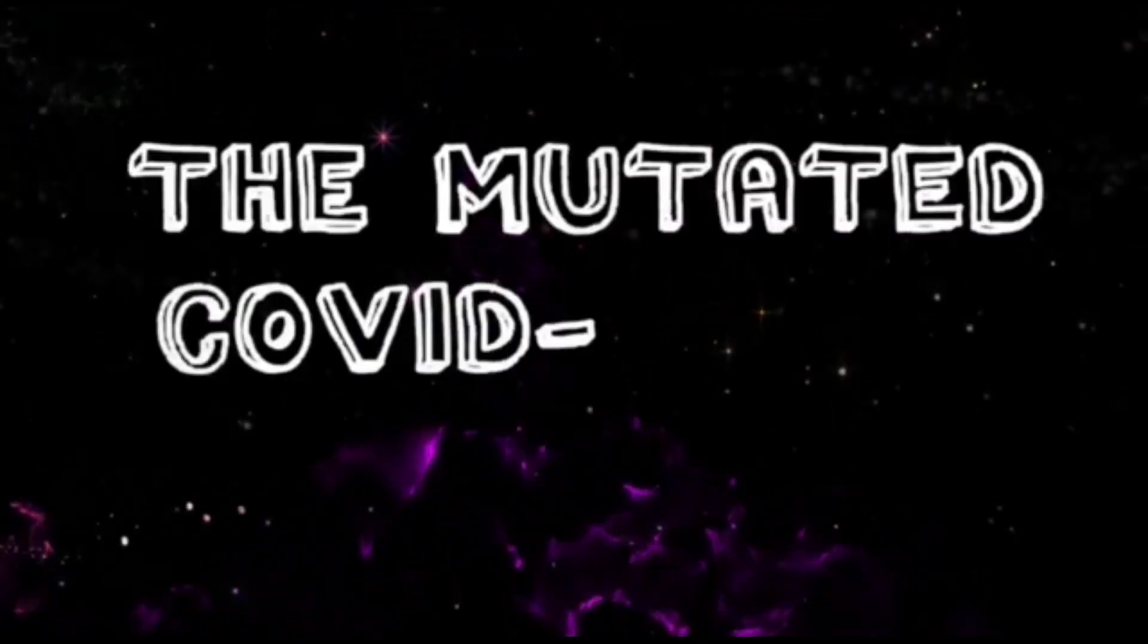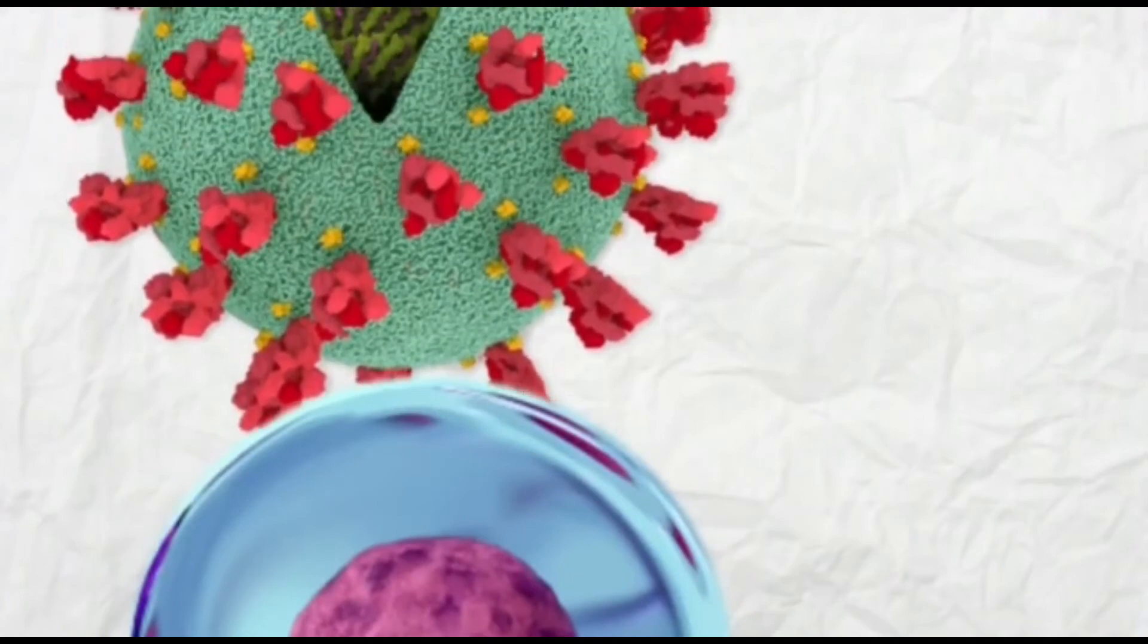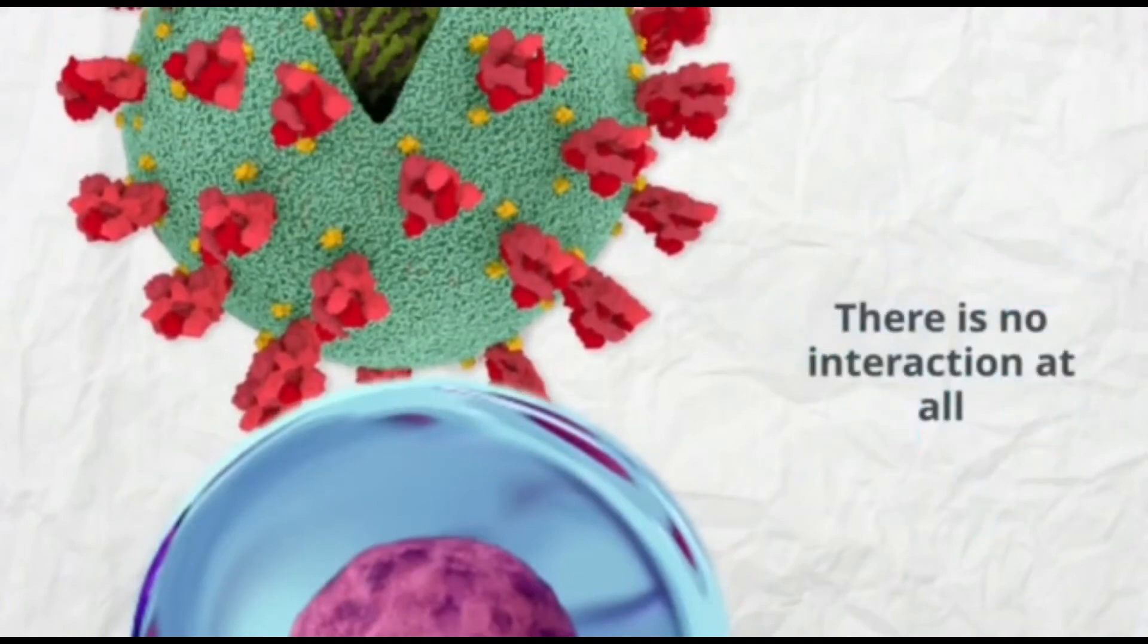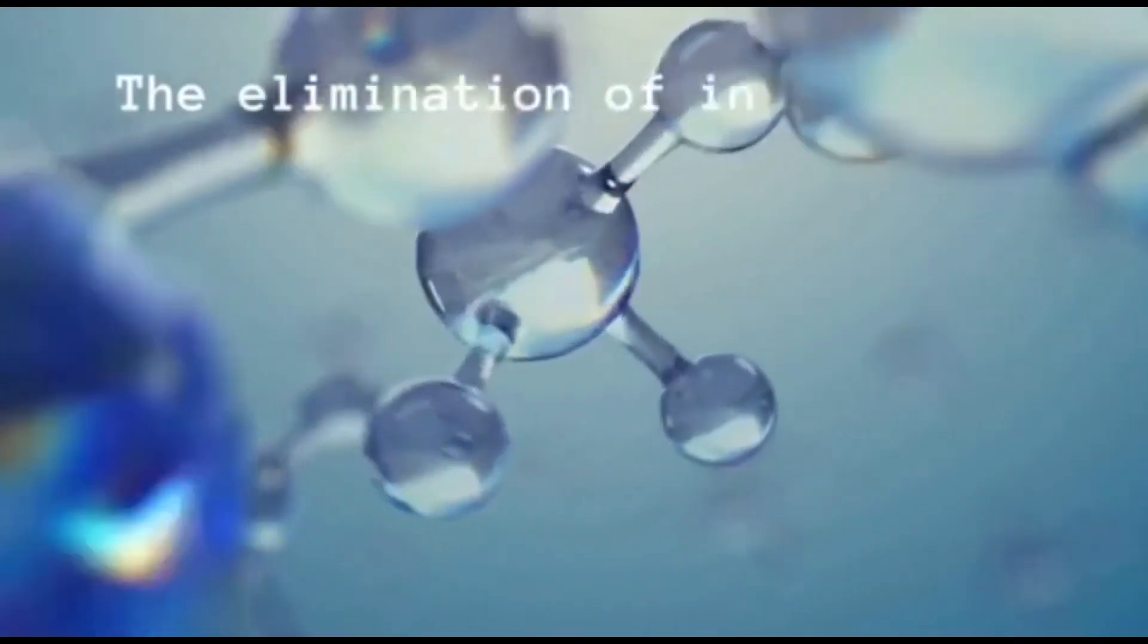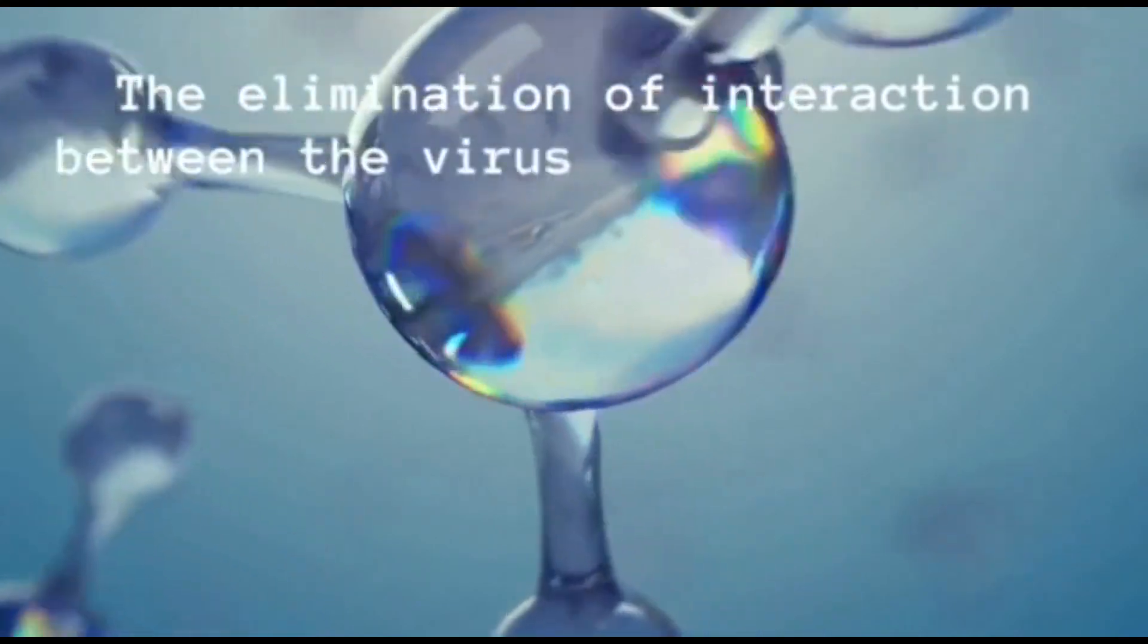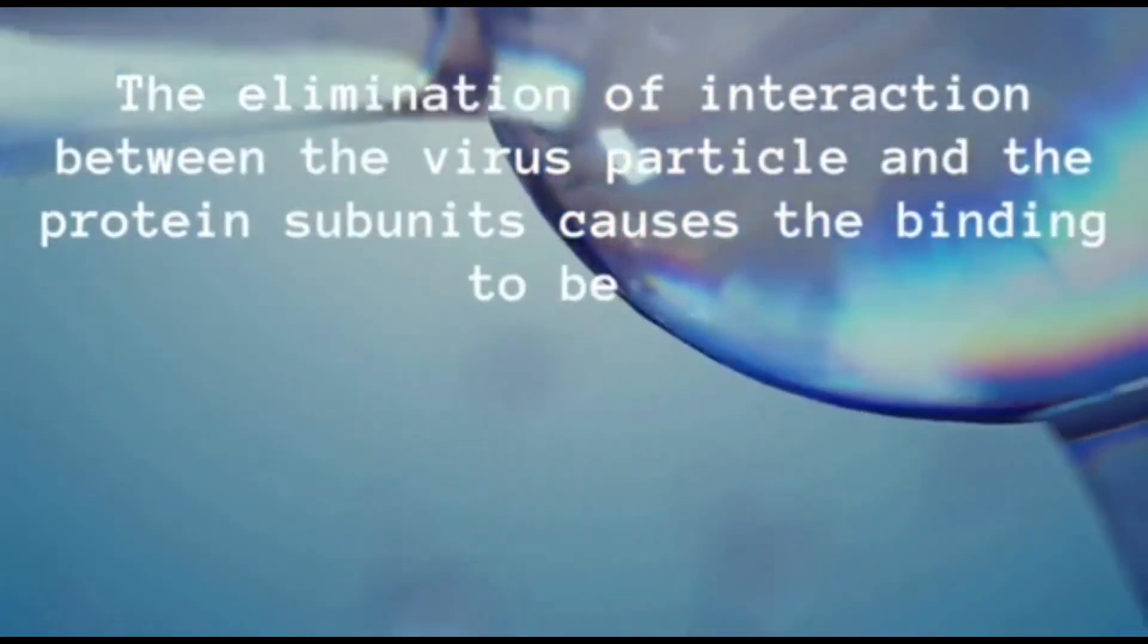And then, this is the mutated COVID-19. As we can see, the binding with the virus particle, there is no interaction with the protein subunit at all, as the mutations are structural in the spike proteins. The elimination of interaction between the virus particle and the protein subunit causes the binding to be efficient and faster.